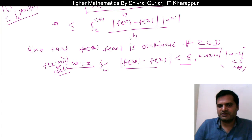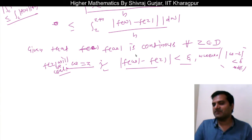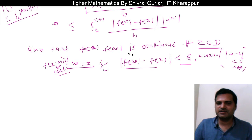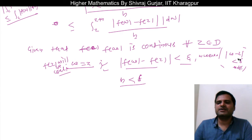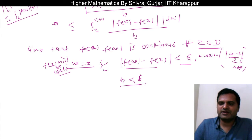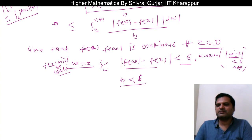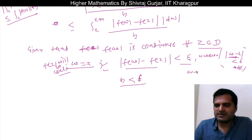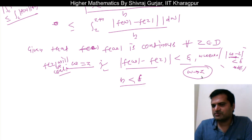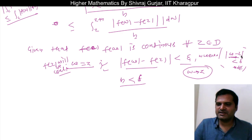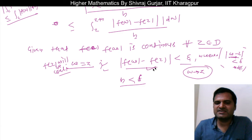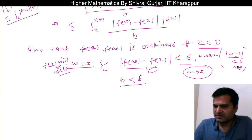If we are able to establish this condition, then we are done. Let us assume that h is very small — specifically, let h be less than delta. Then for any value of ω, since ω approaches z, the difference |ω - z| will approach h, which is itself a very small quantity approaching zero. So whenever |ω - z| is less than delta, the condition is fulfilled, and |f(ω) - f(z)| will always be less than epsilon.